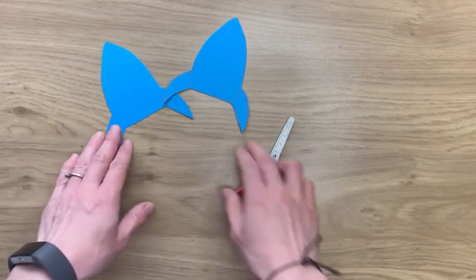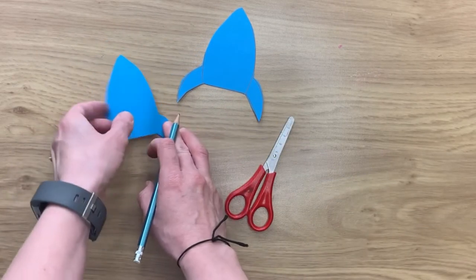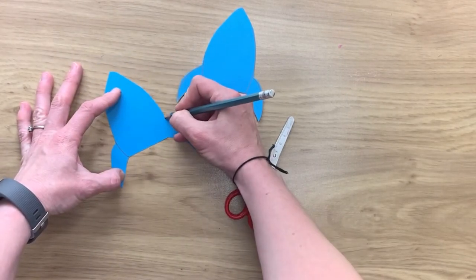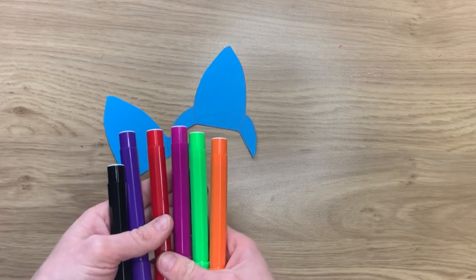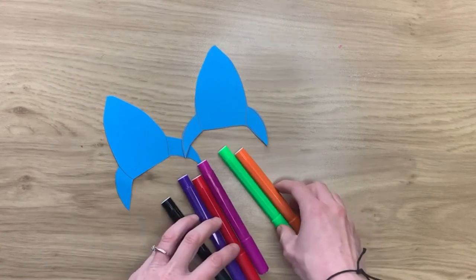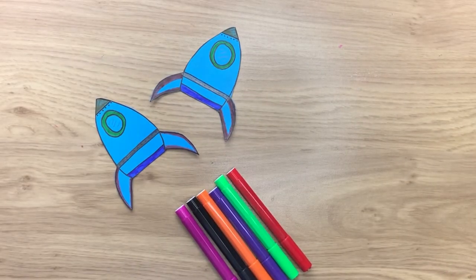Okay so now you've done that the next thing to do is to decorate your rockets however you want to do it. So you'll need your colours to decorate it. So let's see how mine ends up looking. Ready? Click! And there you have it.